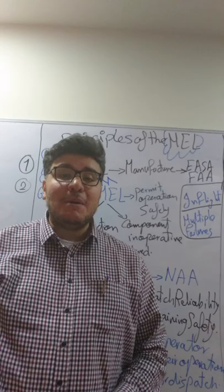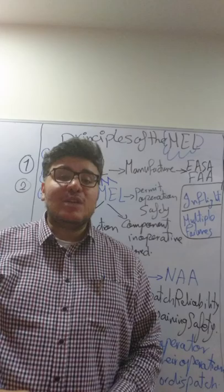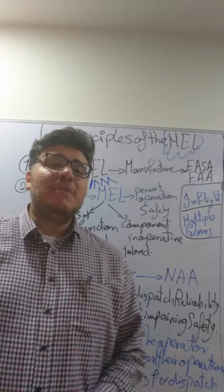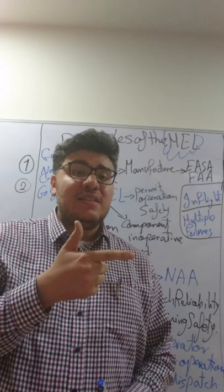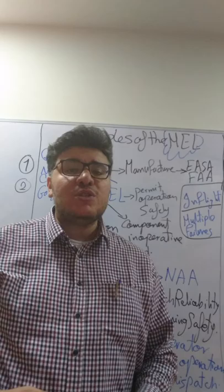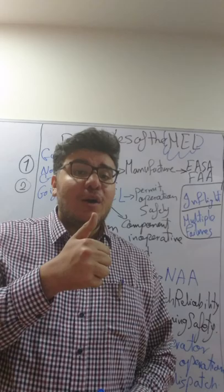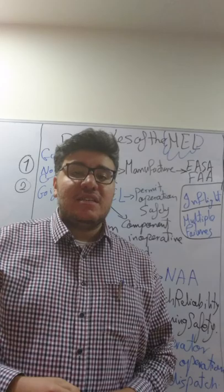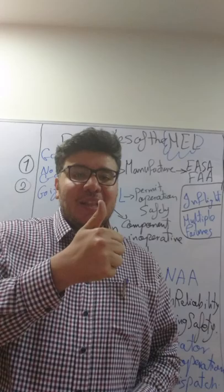So first, what is the minimum equipment list? The minimum equipment list is a basic dispatch document that we use on a daily basis in the operation of the aircraft. Imagine that the aircraft suffers from a component malfunction, a system degrade, or a system function degradation, and we are short of time with no spare part in the warehouse. We need to dispatch the aircraft safely without compromising safety, and we need to take action regarding this malfunction of a component or a system.